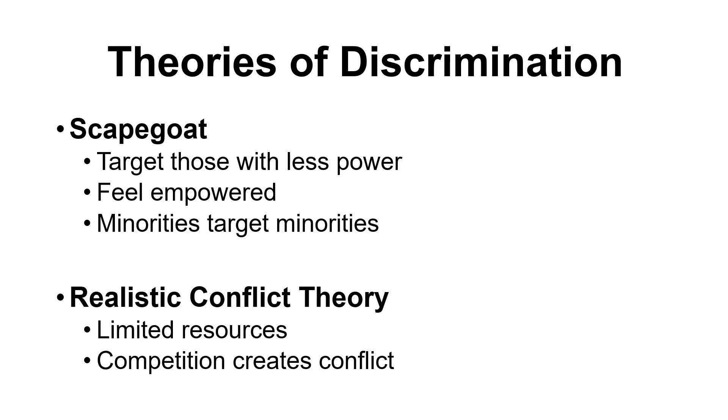Another theory is realistic conflict theory — the idea that competition for limited resources creates conflict. If your group and another group both lack resources and are competing for the same ones, you might frame the other group negatively because you see them as the reason you don't have what you need. Neither of these is necessarily the correct way to frame things, but they are two potential explanations for how discrimination might arise between different groups.